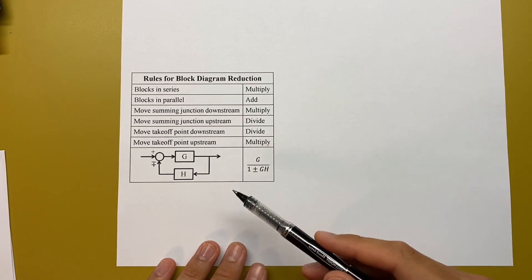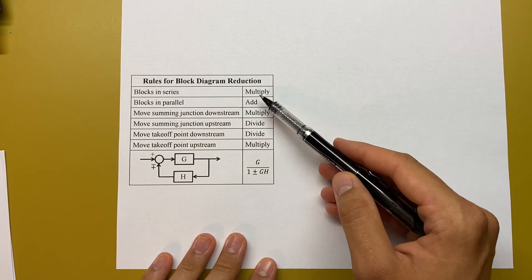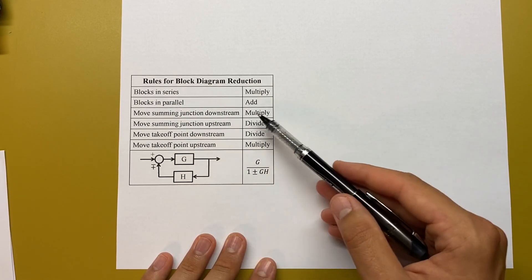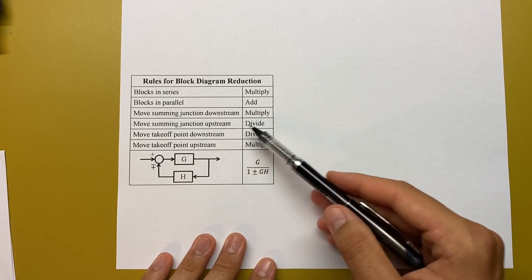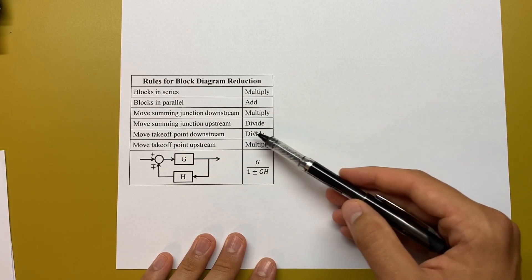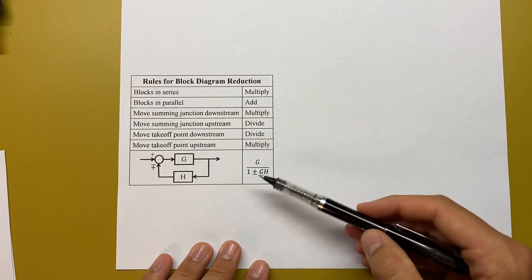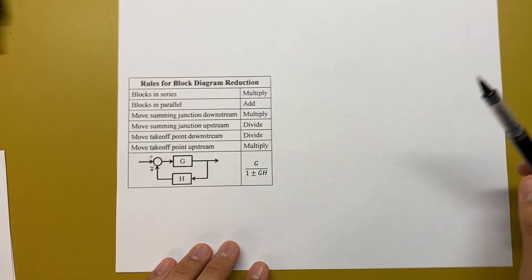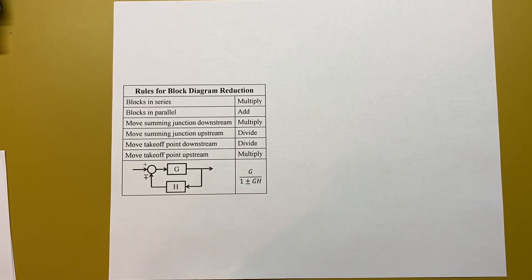Here's a summary of all the rules: blocks in series — multiply them; blocks in parallel — add them; moving a summing junction downstream — multiply the branch; moving a summing junction upstream — divide; for takeoff points it's the opposite. For a feedback system, use the transfer function G / (1 ± Gh). With these rules you can solve pretty much any block diagram reduction problem.